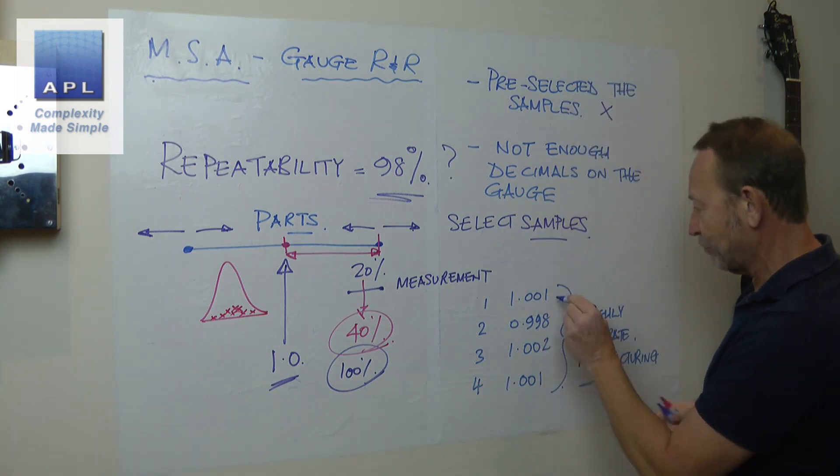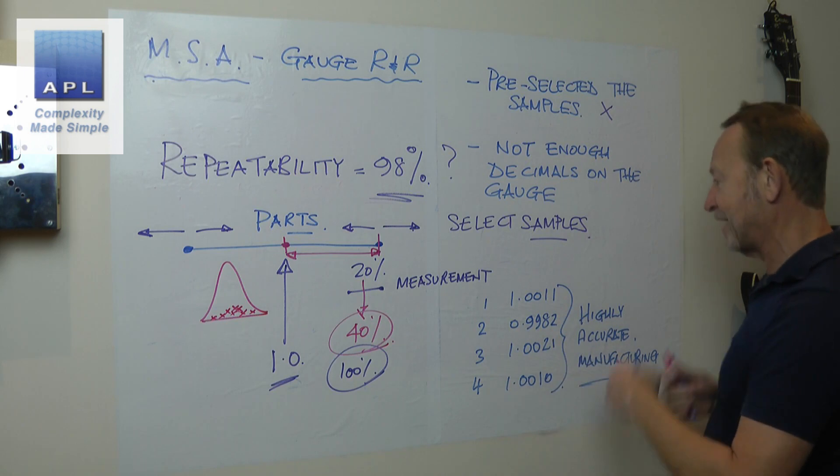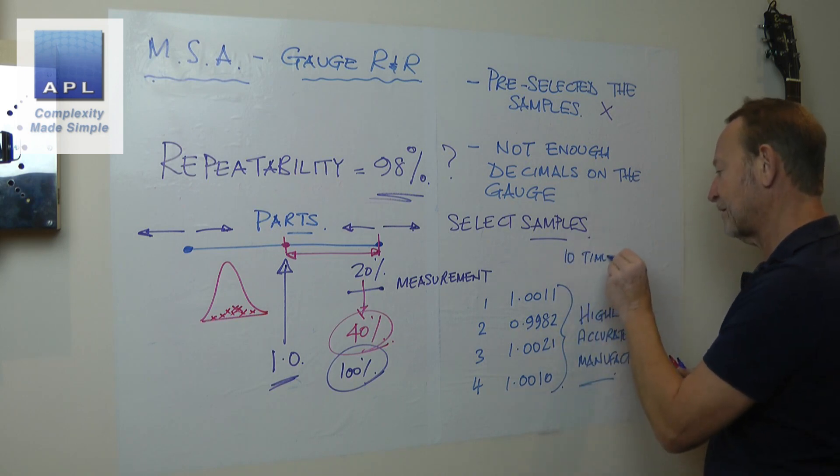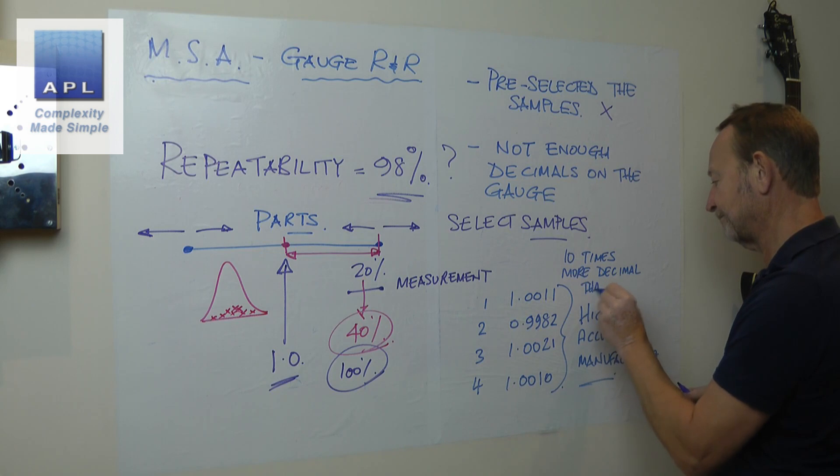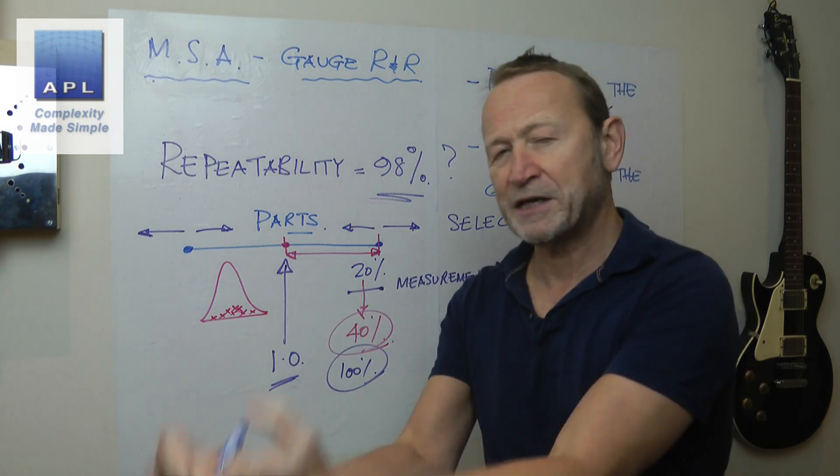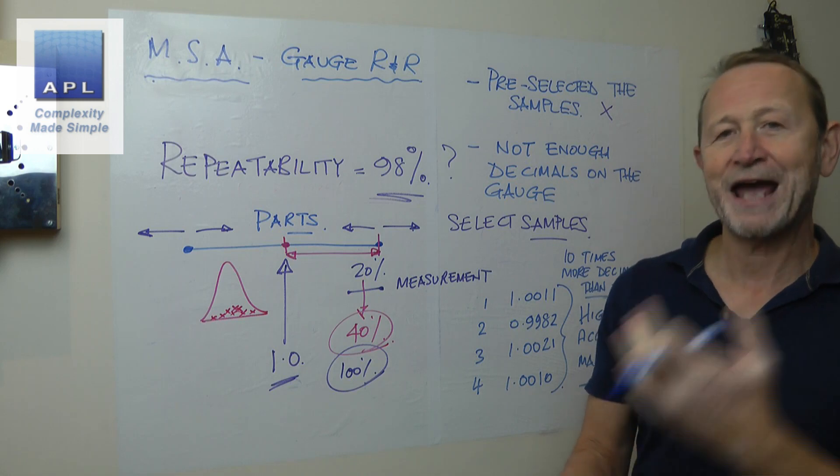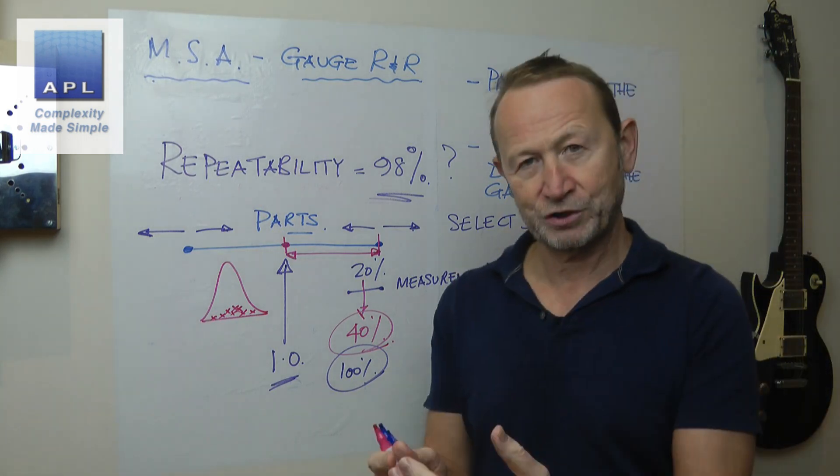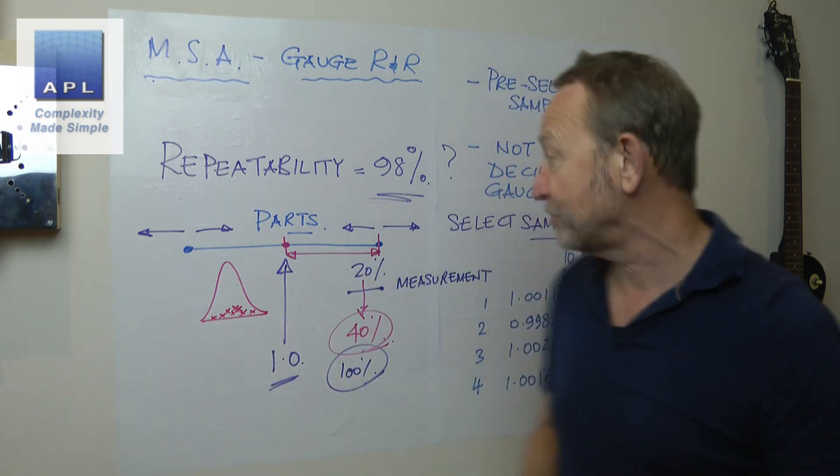You want to be measuring another place again. You should always have 10 times more decimal than the tolerance. So if you're measuring in microns, your measurement system should be 10 times better than that. You should be measuring tenths of a micron. You have that extra decimal place. That helps you to see the variability in the components and not variability in the measurement system.